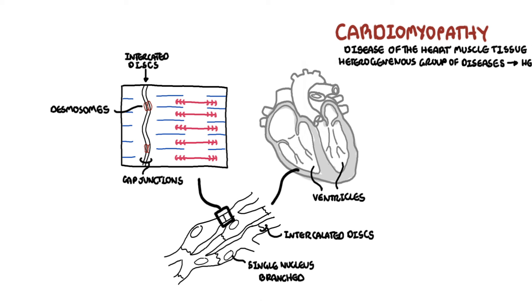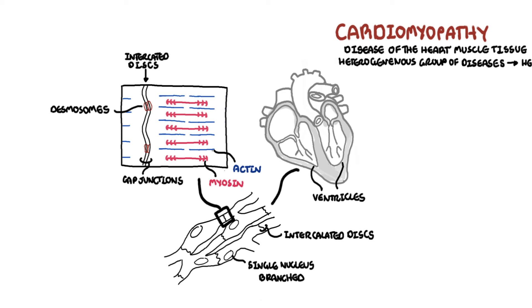The desmosomes hold the fibers together when the heart contracts. The actual contractile units of the cardiac muscles are the sarcomeres, which are made up of myosin and actin filaments. These two filaments slide past one another to cause a muscle contraction.